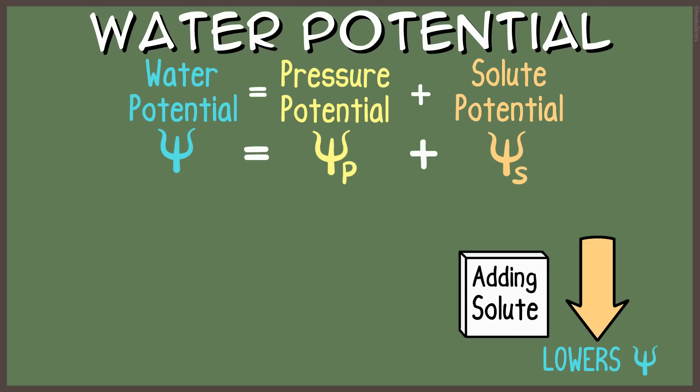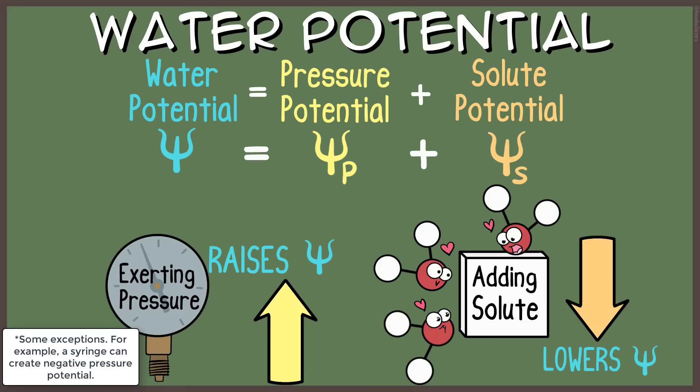Adding solute actually causes the solute potential to have a negative value and the overall water potential to lower. Water will travel to areas of lower water potential. But exerting pressure can raise the pressure potential, a positive value, therefore raising the total water potential.